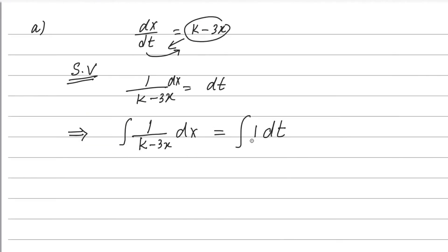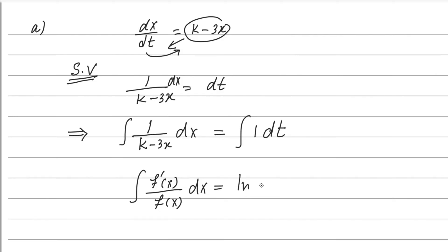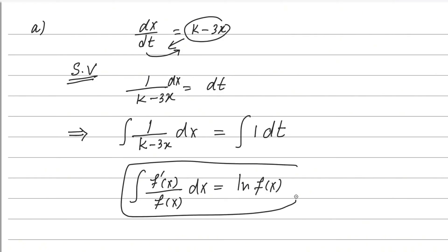The integral of 1 with respect to t is t plus c. For the left-hand side, recall the formula: if the numerator is the derivative of the denominator, we take the natural log of the denominator. This is the key formula for integrating this type of expression.